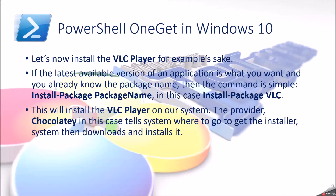Now let's install VLC player as an example. If the latest available version of an application is what you want and you already know the package name, the command is simply Install-Package vlc. Chocolatey, as the provider, tells the system where to go to get the installer. The system then downloads and installs it.